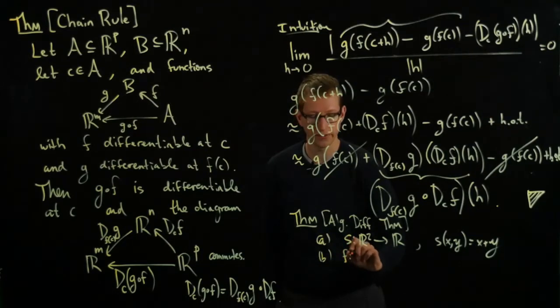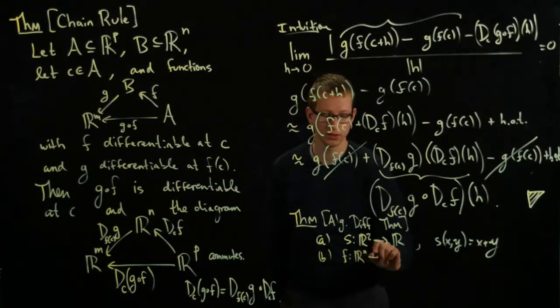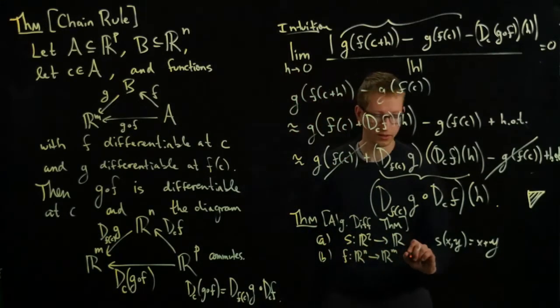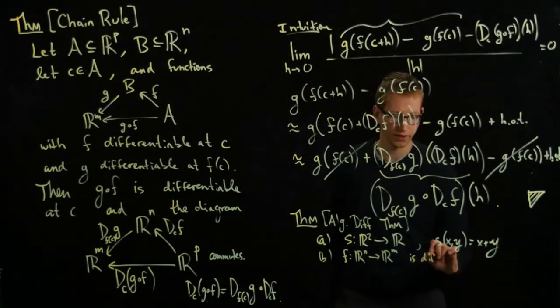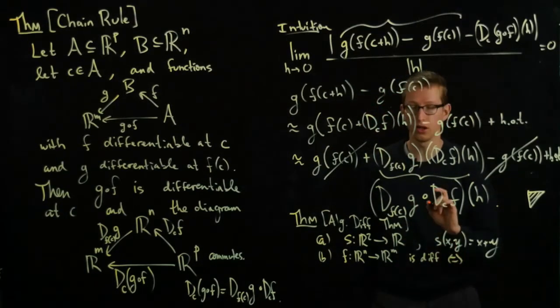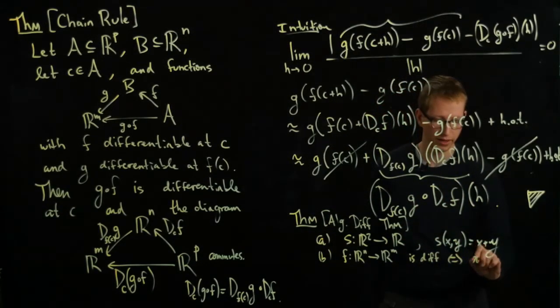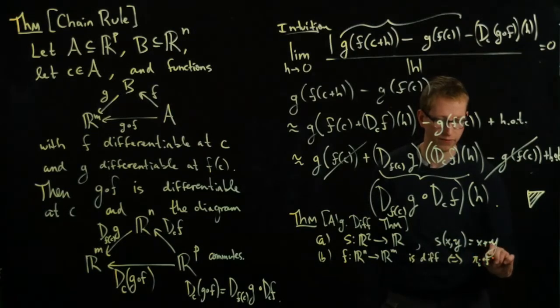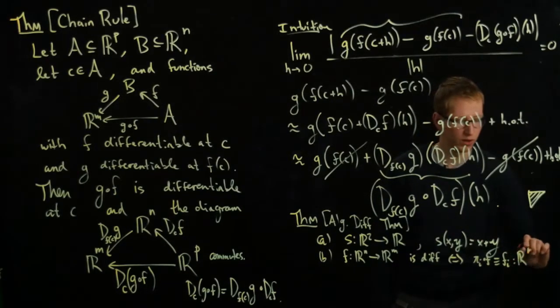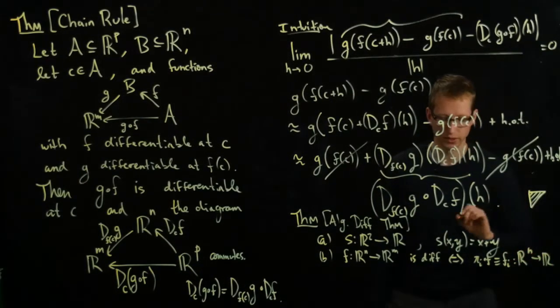Another important example is a function F from R^N to R^M is differentiable at some point C if and only if all of the component functions π_i ∘ F, which we denoted by F_i, from R^N to R^M are differentiable.